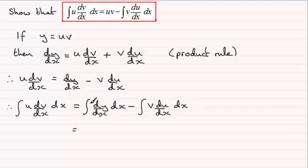Now, if I integrate dy by dx with respect to x, that's just going to take me back to y. And as for this, I'll just leave that as it is, so that's minus the integral of v du by dx, and that's all integrated with respect to x.